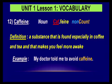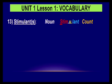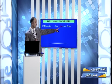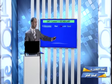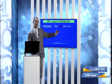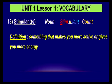The next word is stimulant — it is a count noun, so you can say stimulants. It is a noun divided into three parts: stim-u-lant, with stress on the first part. A stimulant is something that makes you more active or gives you more energy. Caffeine, as we said, is a stimulant.